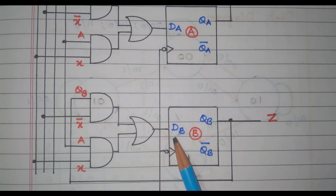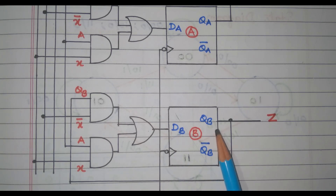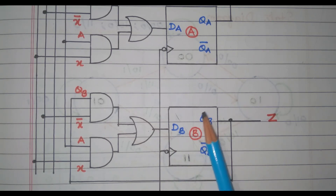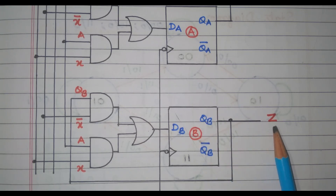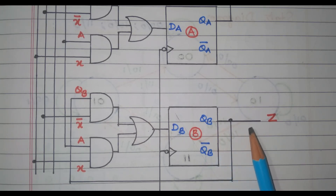So the DA and DB input is given. What is the output Z? Output Z is nothing but QB current state. The B is nothing but Z. This equation is given: Z equal to B. So from B we got the output. Now we have drawn the logic circuit.